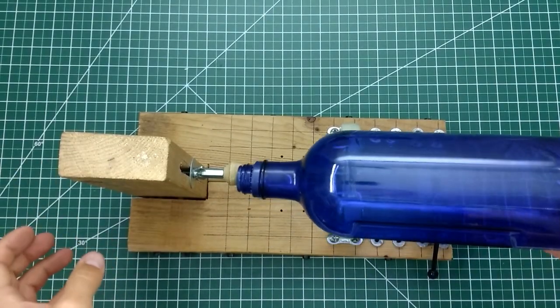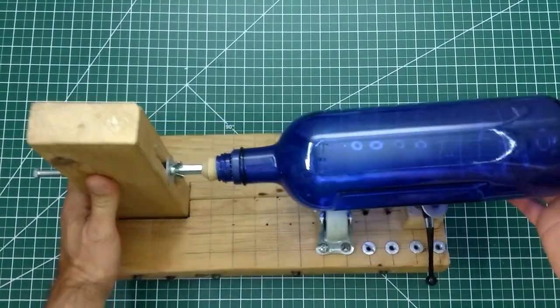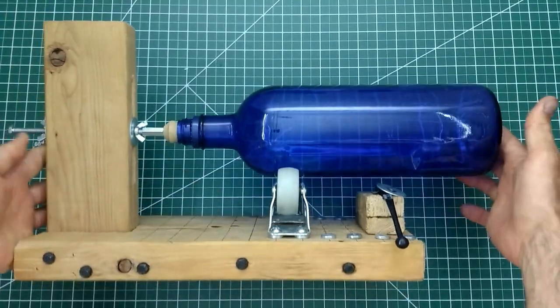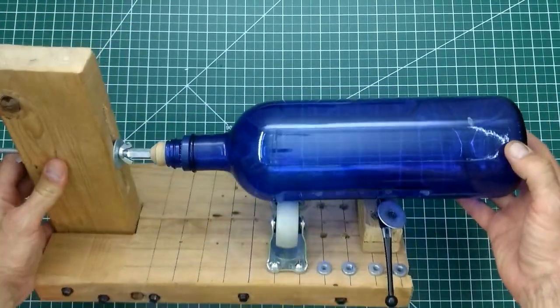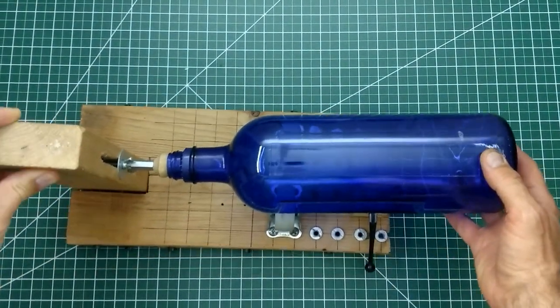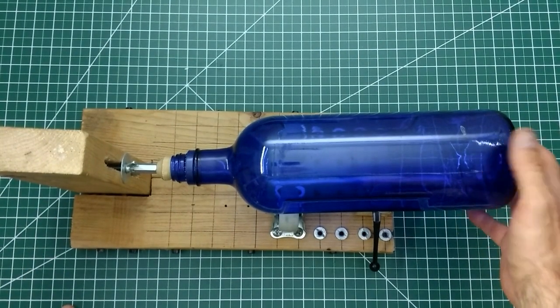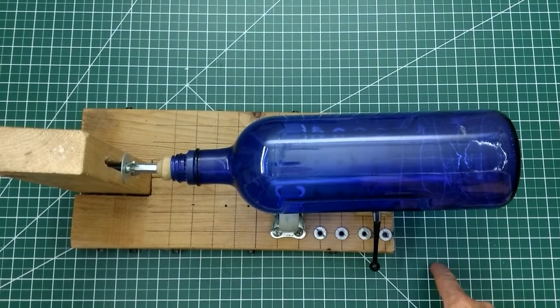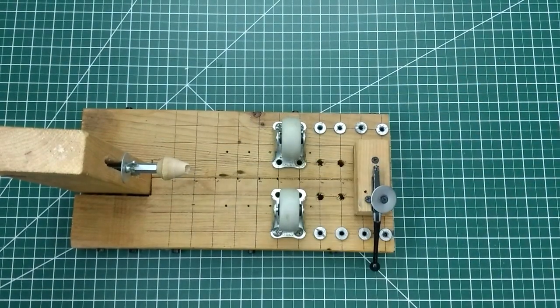Now I grab my bottle scoring jig and... Huh. This bottle is too big for my jig. My mark on the bottle is past the end of the jig. What to do... what to do... Wait. I have an idea.